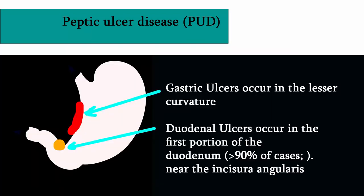Location of ulcers: duodenal ulcers occur in the first portion of the duodenum in 90% of cases. Gastric ulcers occur in the lesser curvature near the incisura angularis. Fewer than 3% of gastric ulcers are malignant.